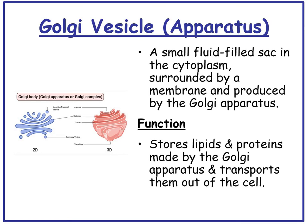The Golgi vesicle is a small, fluid-filled sac in the cytoplasm, surrounded by a membrane and produced by the Golgi apparatus. Its function is to store lipids and proteins made by the Golgi apparatus and transport them out of the cell.